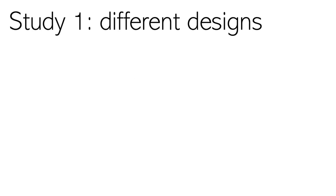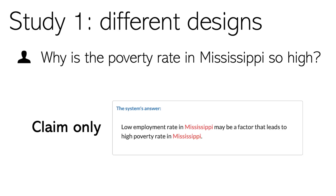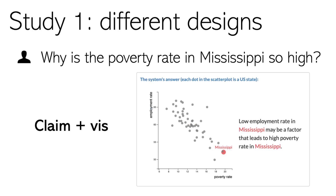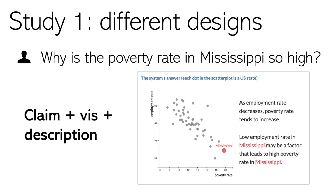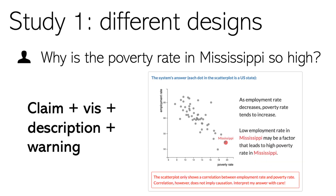To learn what kinds of design led to the most useful interpretation, we presented the answers with different designs. In the first design, there is only a causal claim. The second design presents a scatter plot as visual evidence about correlation. In the third design, we further added a textual description of the correlation between the two variables. In the final design, there is a message warning participants that although there seems to be a correlation between the two variables, correlation is not causation.